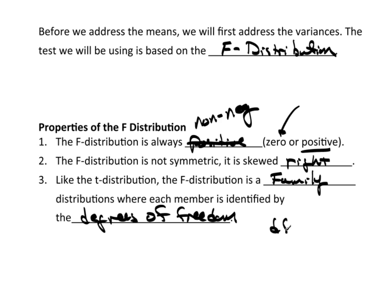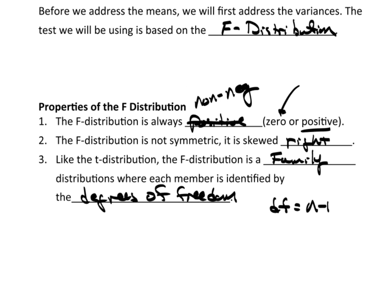For the T distribution, the degrees of freedom was n minus 1. Well, remember I said we would be looking at the ratio of variances. So, what we're really comparing is group 1 variance over group 2 variance. These are two different data sets. Data set 1, data set 2. Now, data set 1 will have its own degrees of freedom, n1 minus 1. Data set 2 will also have its own degrees of freedom, n2 minus 1.